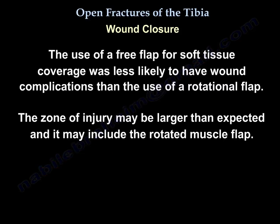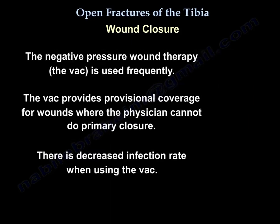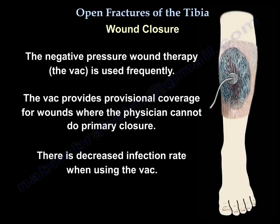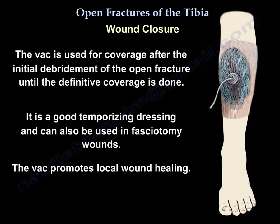The use of a free flap for soft tissue coverage is less likely to result in wound complications than a rotational flap, as the zone of injury may be larger than expected and may include the rotated muscle. Negative pressure wound therapy (VAC) is used frequently — it provides provisional coverage for wounds where primary closure is not possible. The VAC is used after initial debridement until definitive coverage is completed, and can also be used in fasciotomy wounds. It promotes local wound healing.